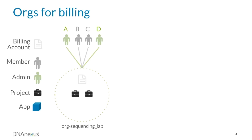This is useful if you have a lab working with a shared budget, where each lab member needs to have the ability to work independently in their own projects. Members of the org can also create apps that are billed to the org, and the org will be responsible for the storage associated with those apps. Associating a billing account with an org allows labs with a shared budget to consolidate all platform activities onto one invoice.